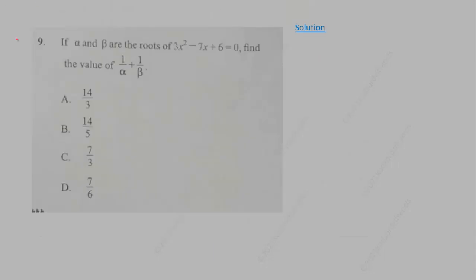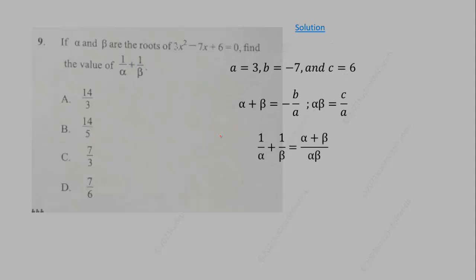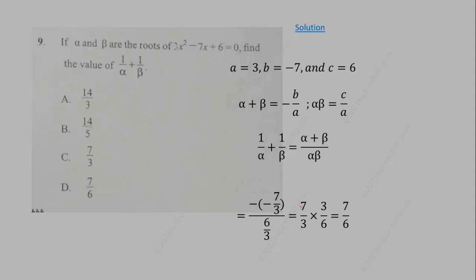Question 9: if α and β are the roots of 3x² − 7x + 6 = 0, find 1/α + 1/β. Combining the fractions gives (α + β) / (αβ). Using Vieta's formulas, α + β = 7/3 and αβ = 6/3 = 2. So (7/3) / 2 = 7/6.